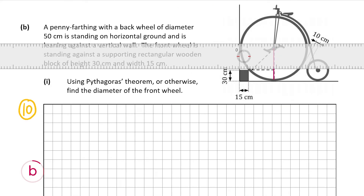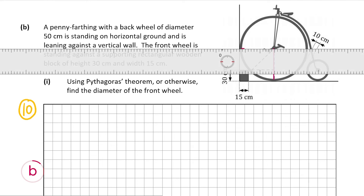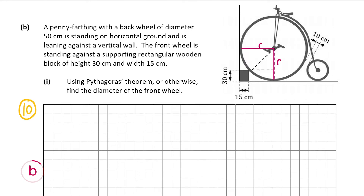We need to find where the center is and the radius. Since the wheel is touching both the ground and the vertical wall, the distance from the wall to the center and the distance from the ground to the center are both equal to r. So the center can be given as (r, r) — whatever the radius is, that's both the x and y value of the center. So h equals r and k equals r, and we substitute into our equation to get: x minus r, squared, plus y minus r, squared, equals r squared.